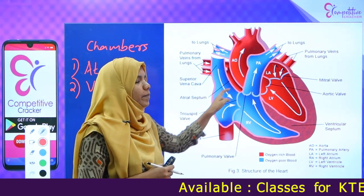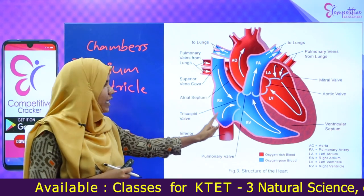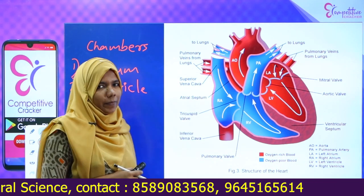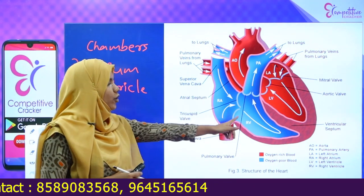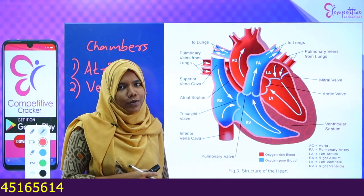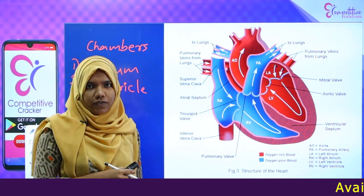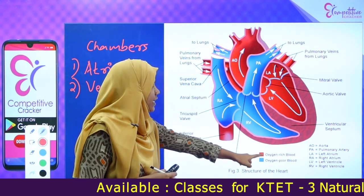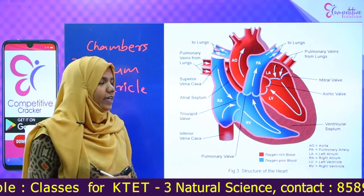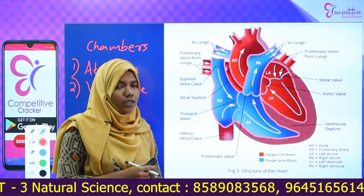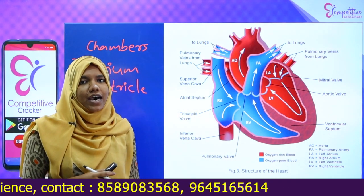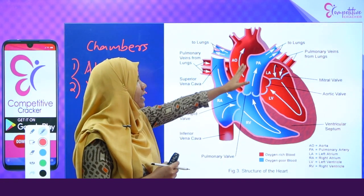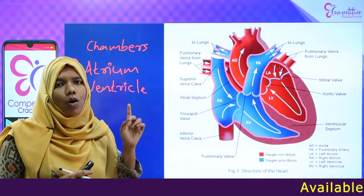The upper chambers are called Atrium — Right Atrium and Left Atrium. Red color indicates oxygen-rich blood, and blue color indicates oxygen-poor blood, which is carbon dioxide-rich blood.